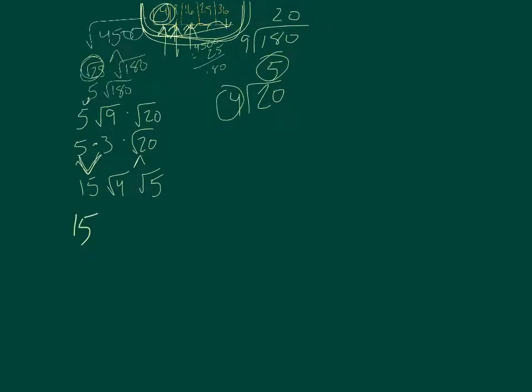So fifteen. What's radical four? What's the square root of four? Two. And then bring down radical five. Now, can I simplify anything else? Of course. Fifteen times two is thirty. Radical five.